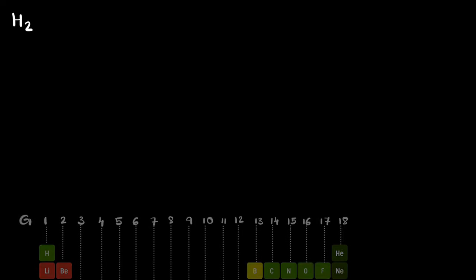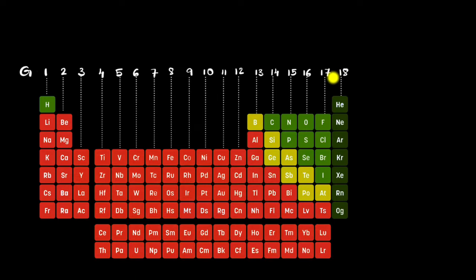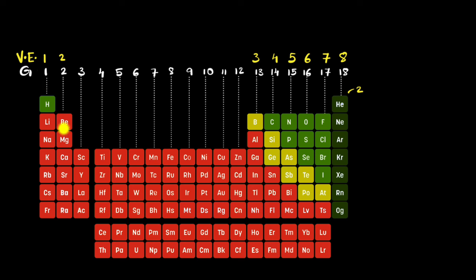Valence electrons represent the number of electrons in the outermost shell. If we bring up our periodic table, the valence electrons for all elements belonging to a particular group are given this way. The first group will have one valence electron, the second group will have two valence electrons, and so on and so forth.